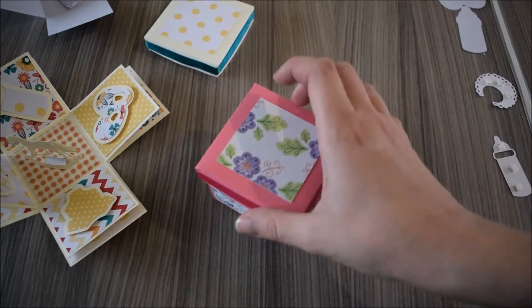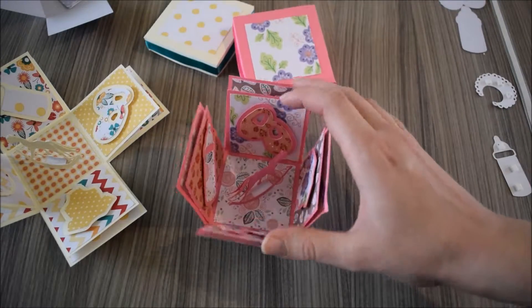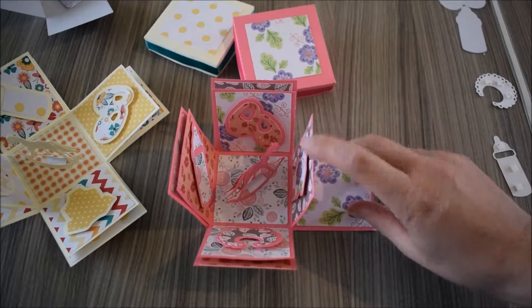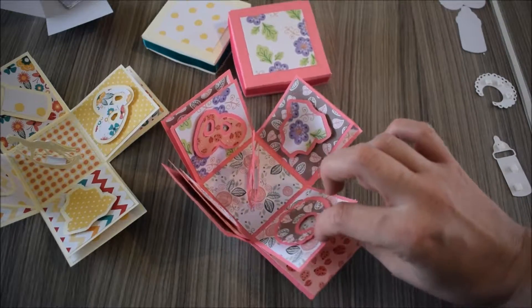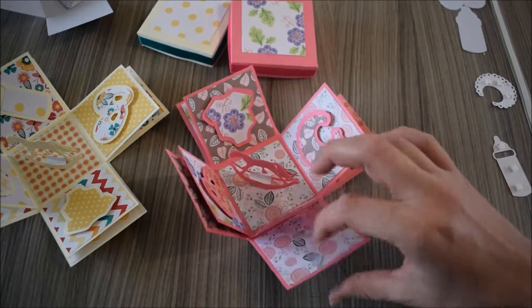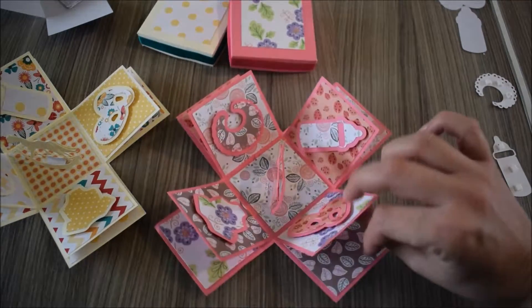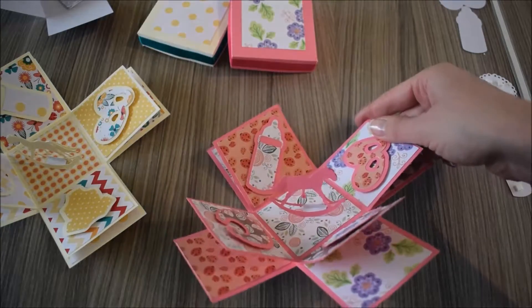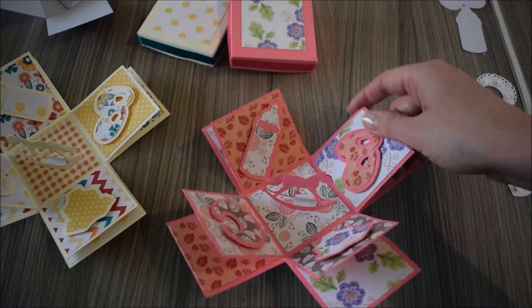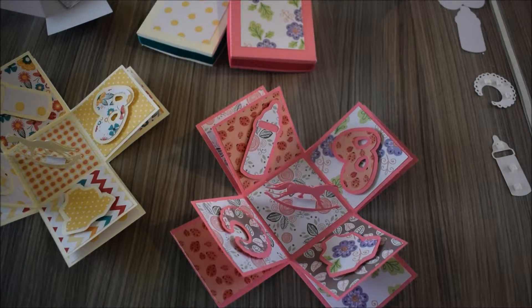And then this one for a girl—pink one. Again, we went for pink and brown, lots of floral, little ladybirds, and the same with my teeth. It works really well both colors. There we go, little rocking horse in the middle again. Okay, so the one I'm going to show you how to make today is the blue one.